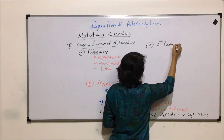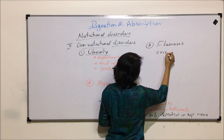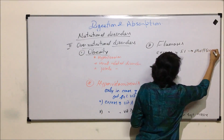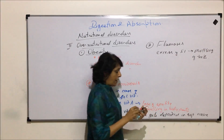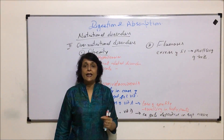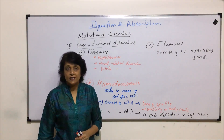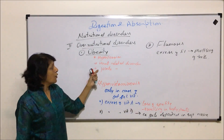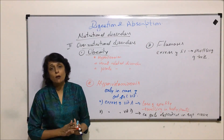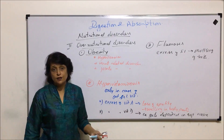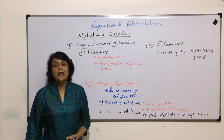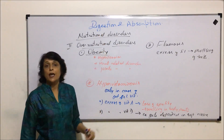The third over-nutritional disorder is due to excess of fluoride and is known as fluorosis. Excess fluoride results in mottling of teeth. Fluoride is required for formation of teeth, but if in excess, teeth get deformed — there is yellowing, they become brittle and start to fall off, and deformities in teeth occur, known as mottling. So everything in our body should be taken in the required amount; too little causes deficiency diseases and too much also results in problems. With this we have completed our chapter on digestion and absorption.